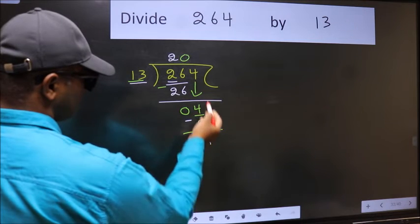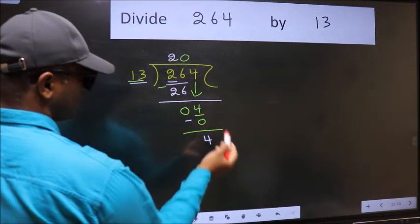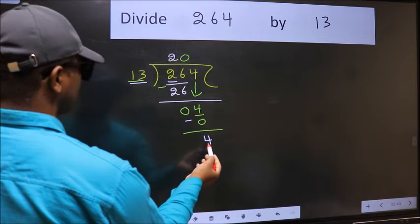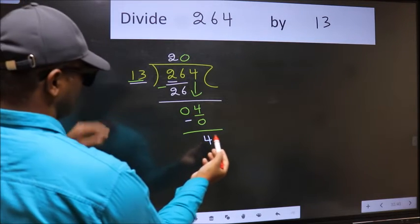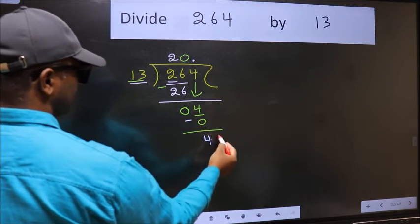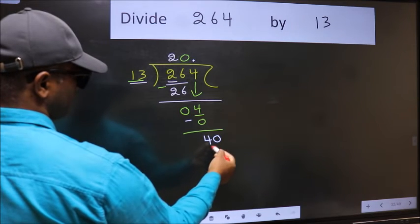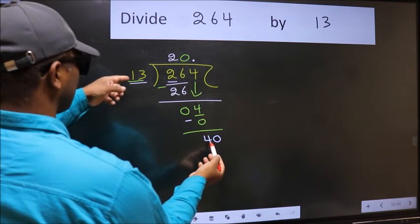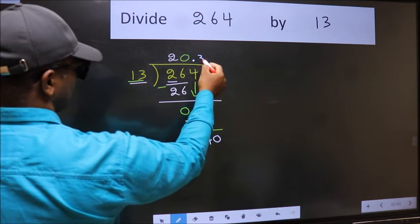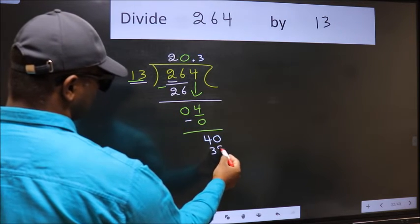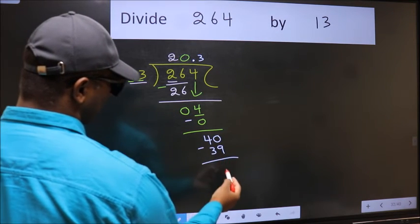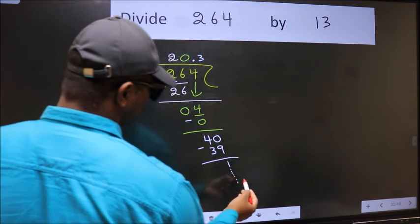Over here, we did not bring any number down, and 4 is smaller than 13. So now we can put dot and take 0. So 40. A number close to 40 in 13 table is 13 threes, 39.